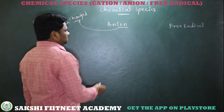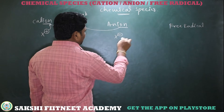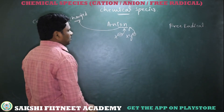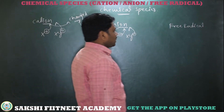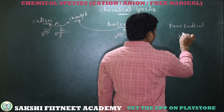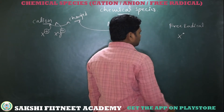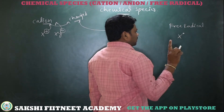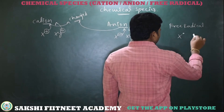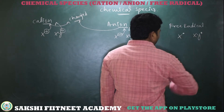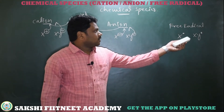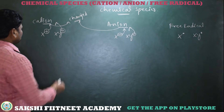Coming to anion — assume this is an element which has a negative charge, or a group of elements which has a negative charge — that is called an anion. Coming to free radical, there is no positive charge, no negative charge. These are neutral with an odd number of electrons — out of all electrons, one electron is unpaired. Element or group of elements which have a neutral charge with an odd number of electrons are called free radicals.